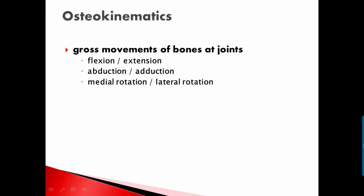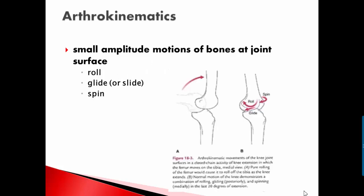Okay, so let's look at this. Gross movements of the bones at joints, as I said: flexion extension, abduction and adduction, medial and lateral rotation. Arthrokinematics are these small motions, what they call roll, glide or slide, and then spin.